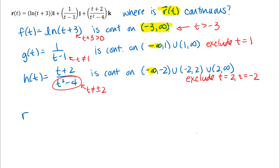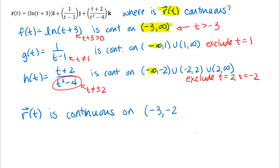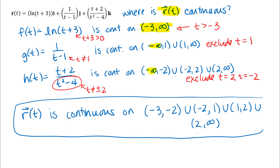Tying it all together: r of t is continuous on the interval from negative 3 to negative 2, union negative 2 to 1, union 1 to 2, union 2 to infinity. Those are the intervals where r of t is continuous. Try some homework problems like that and then watch the next video.